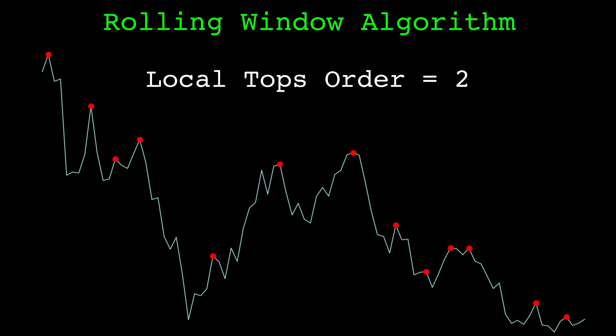Here is every local top of order 1 in this sample. Here is every top with order 2, and here is every top with order 3. As the order increases the number of local tops we find decreases, as we are being more selective.